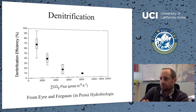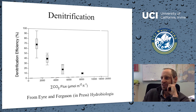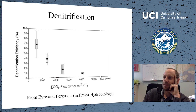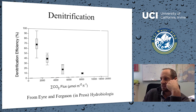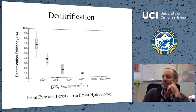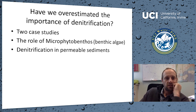Healthy coastal ecosystems typically have a denitrification efficiency of around 70%. I want to stress this is based on studies in primarily muddy sediments. Many of these studies were also undertaken in sediments without light reaching the surface. Whether a sediment is cohesive and muddy versus sandy and permeable, and its productivity level, has important implications for how much denitrification can actually take place.